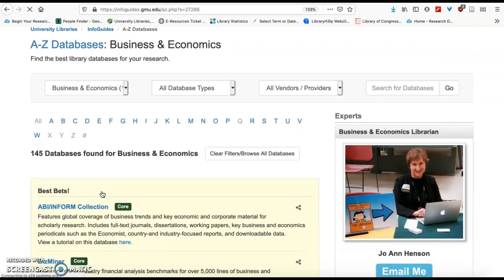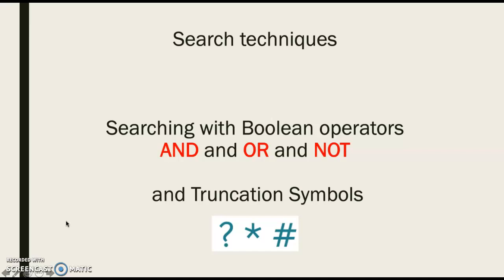There are also terrific resources for company and industry information that you should be familiar with. Now I'm going to talk about the strategies we're going to use to do your searches. I talk a lot about Boolean operators — this is really just a search technique that utilizes the connectors AND, OR, and NOT, as well as truncation symbols, which get you results for all the words you put them behind.